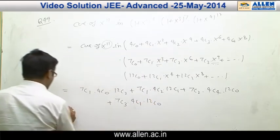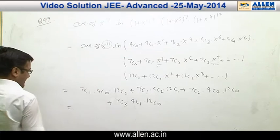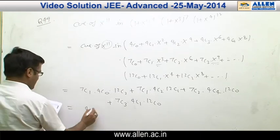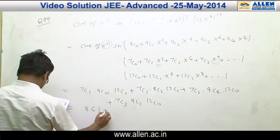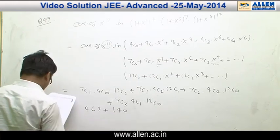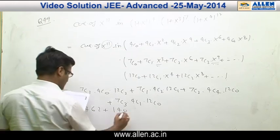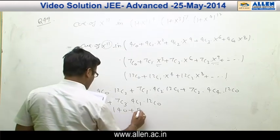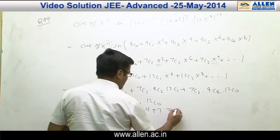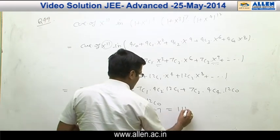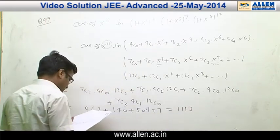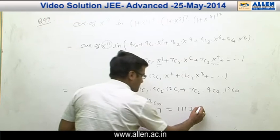Now we find the individual terms: 4C2 gives 462, plus 140, plus 504, plus 7. The total sum is 1113. The correct answer is option C.